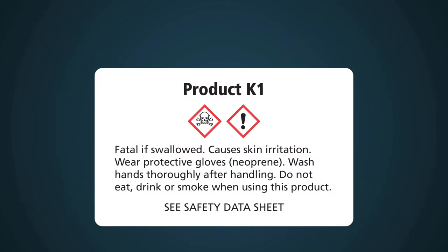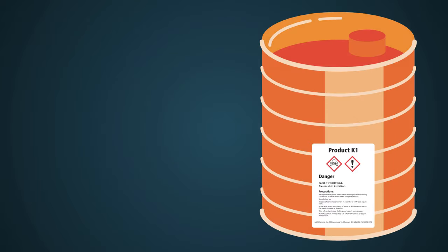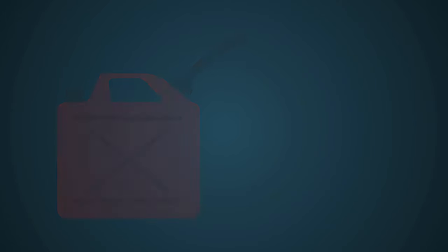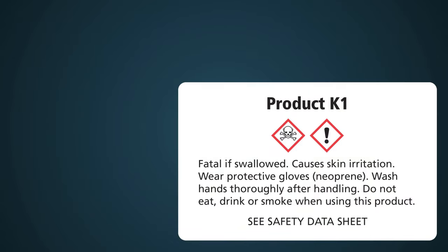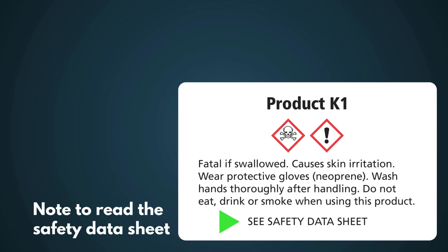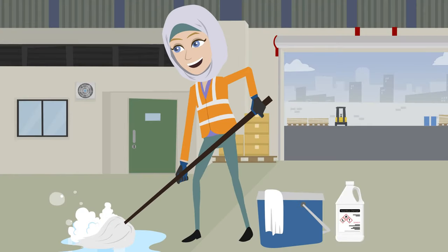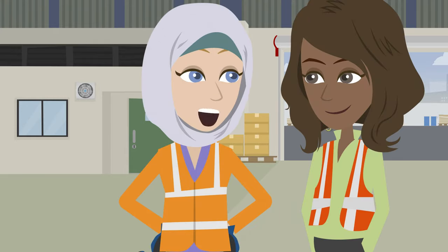Sometimes a product will have a label made at your workplace. Workplace labels are used when a product is transferred to a new container, or when the supplier label is missing or difficult to read. A workplace label must have the name of the product, safe handling precautions, and a note that tells you to read the safety data sheet. Always read, understand, and follow the instructions on the label. If you are unsure about anything, ask your supervisor.